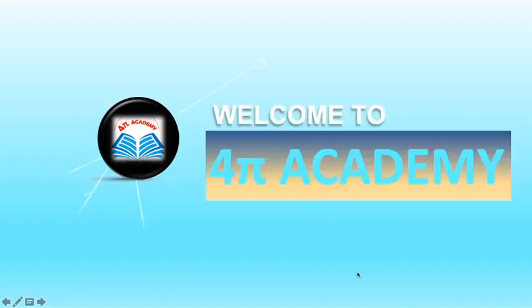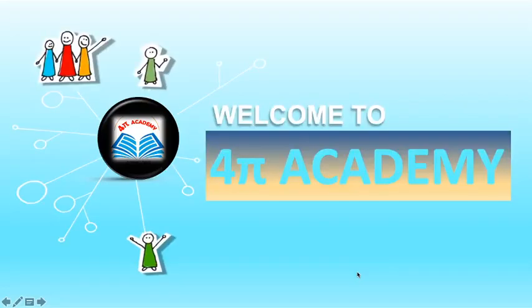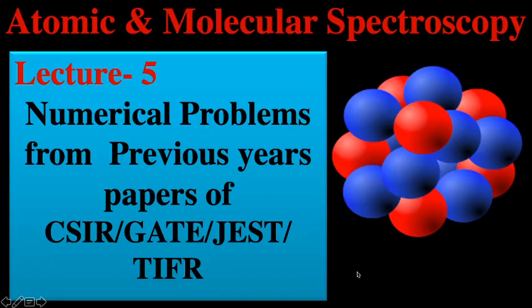Hello, dear students, I welcome all of you again in 4Pi Academy. In this series on atomic and molecular spectroscopy, in the previous four lectures we discussed the Bohr spectra of hydrogen atom, the energy spectral lines of hydrogen and hydrogen-like spectra, the first line and series limit of the Bohr spectrum, and the Rydberg atom, finding the Rydberg constant for finite and infinite nuclei.